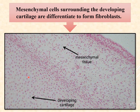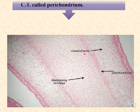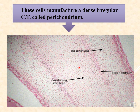The mesenchymal tissue surrounding the developing cartilage also undergoes changes: the surrounding mesenchymal cells differentiate into fibroblasts. These fibroblasts then manufacture the dense irregular connective tissue that forms the perichondrium surrounding the developing cartilage.